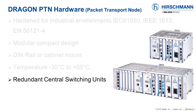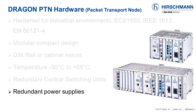Industrial networks are often mission critical and failure is not an option, so it's important that essential hardware components are duplicated. The central switching unit is the core processor for the Dragon PTN, and most chassis support redundant central switching units. Redundant power supplies are also available — these power supplies are hot swappable, meaning they can be exchanged while the device is running. Power input options include 18 to 60 volts DC, 88 to 300 volts DC, and 90 to 264 volts AC.